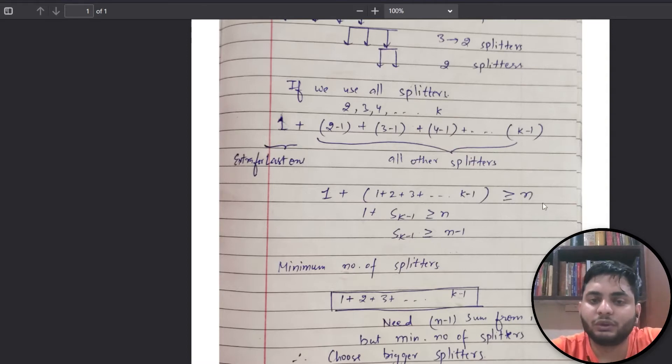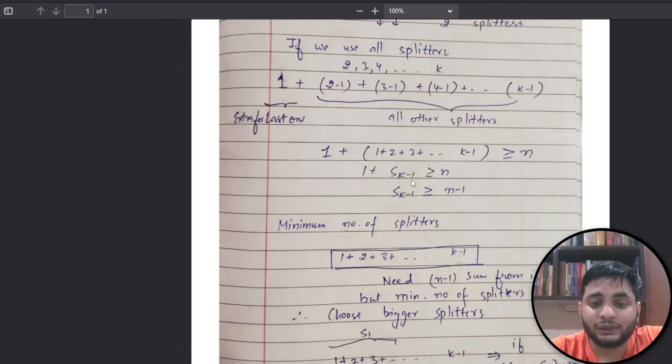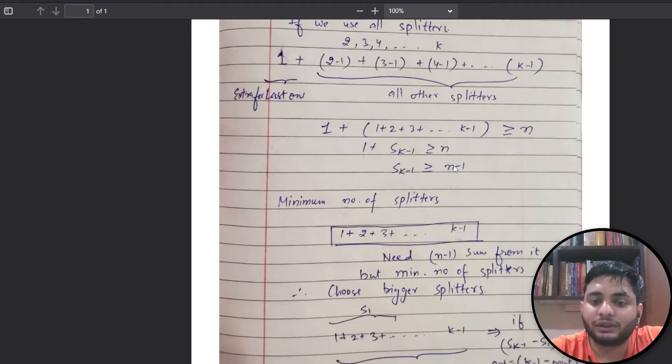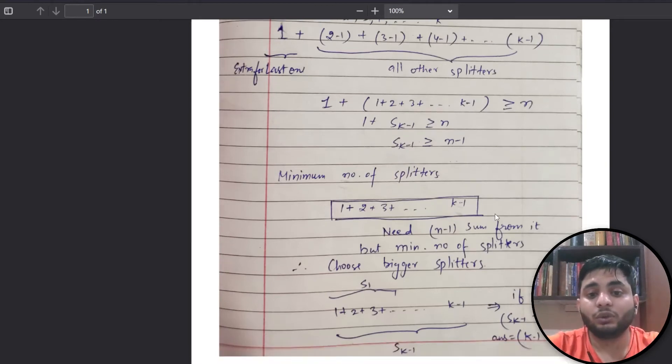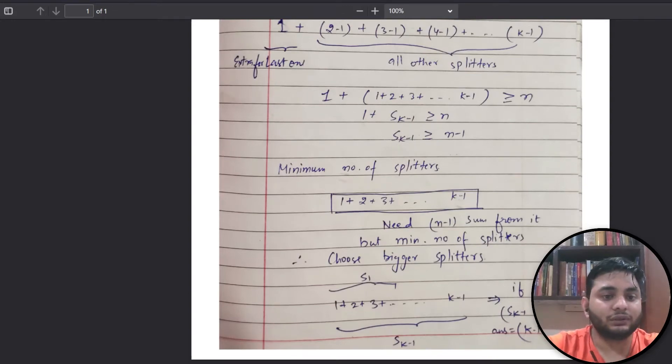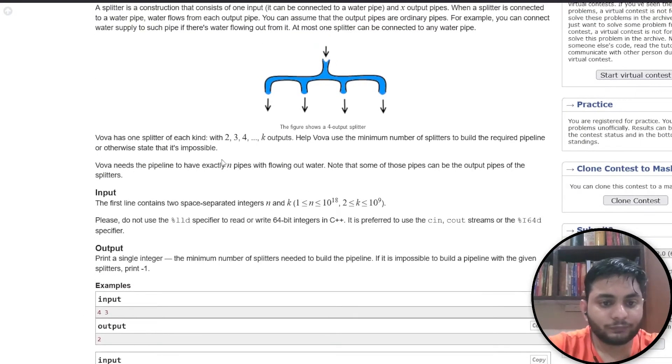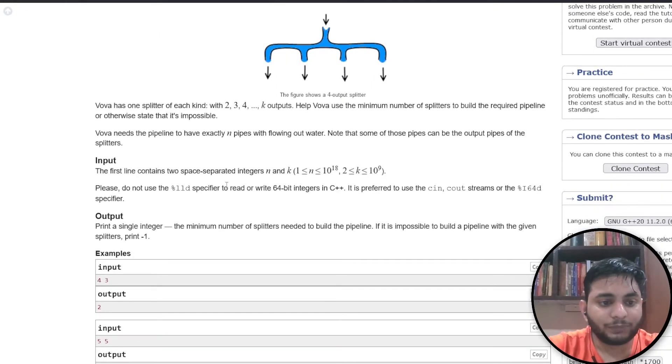This sum is from 1 to k minus 1. One plus sum of k minus 1 should be greater than or equal to n because we need to have n outputs. So sum of k minus 1 should be greater than equal to n minus 1. This gives us one condition to check whether we can achieve this or not.